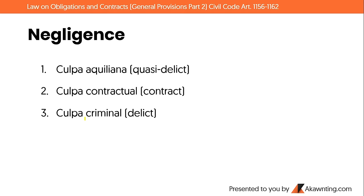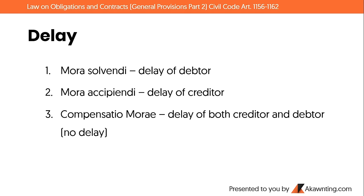Moving to delay: there are three types — mora solvendi (delay on the part of the debtor), mora accipiendi (delay on the part of the creditor), and compensatio morae (delay of both creditor and debtor, in which case effectively there is no delay). Delay generally arises only upon demand. This concept will be discussed further in the next video.